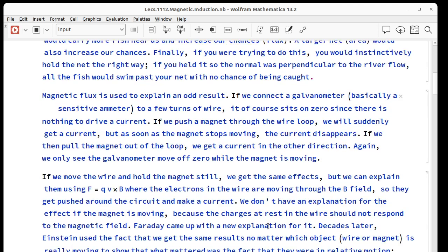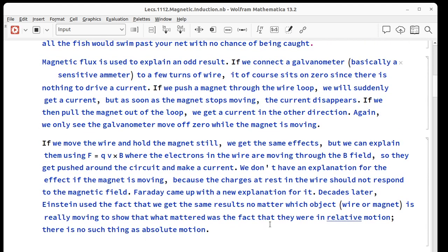Now the reason we care about magnetic flux is it explains a result that's been odd for a very long time. We take a galvanometer, which is essentially a very sensitive ammeter, and connect it to a few turns of wire. Of course it sits on zero because there's nothing to push a current through it. If we now take a magnet and push it through the loop of wire, we get a current, but as soon as the magnet stops moving, the current disappears.